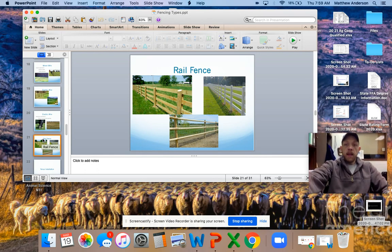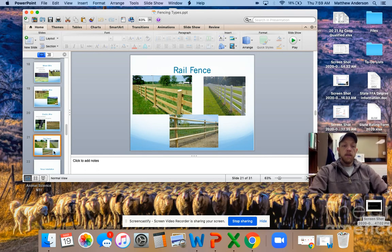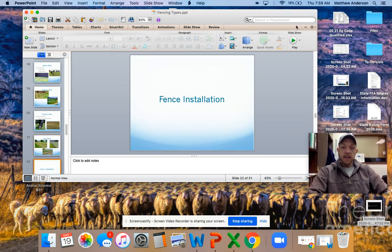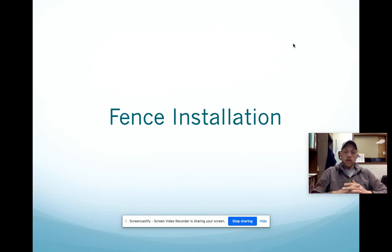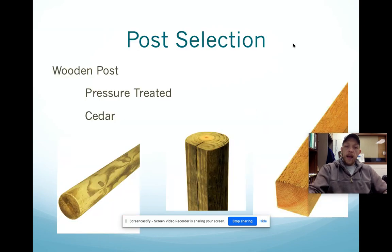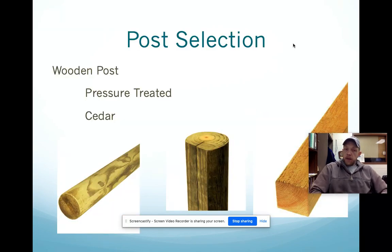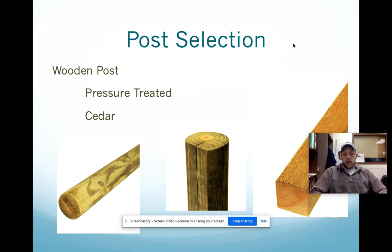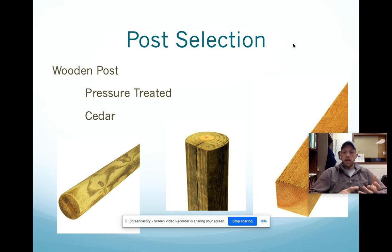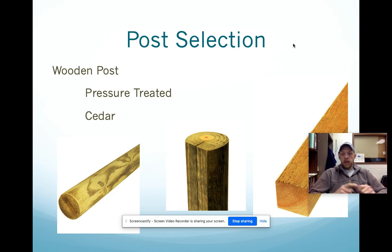Today, again, going to be brief. We're going to talk about fencing installation. The first thing we have to determine when installing fence is what type of posts are we going to use. Most of the time when we talk about ag fence — installing barbed wire or woven wire — it's going to be a combination of two types. Now this isn't always the case, but it seems to be the most common thing.